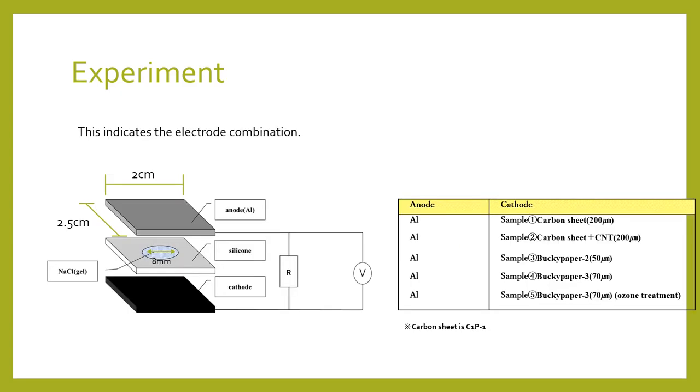A gel-type aluminum air battery was produced. The structure is shown here. The size of the electrode is the same as that of the aluminum plate. The buckypaper is described as buckypaper hyphen N in which N sheets are stacked.